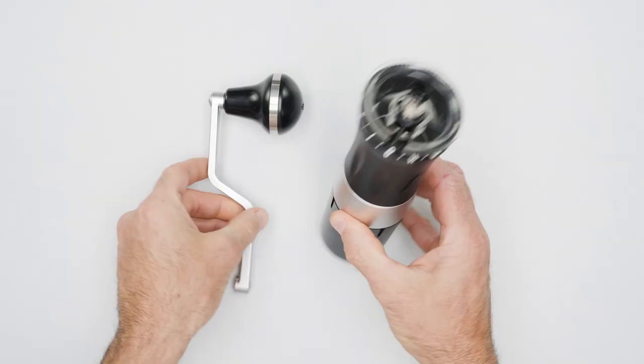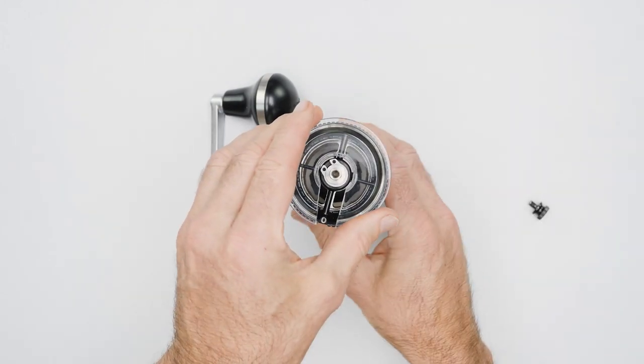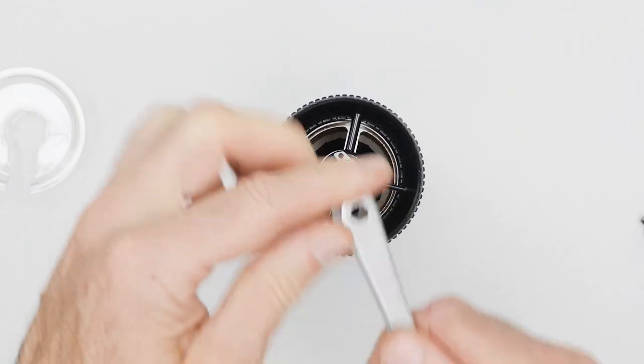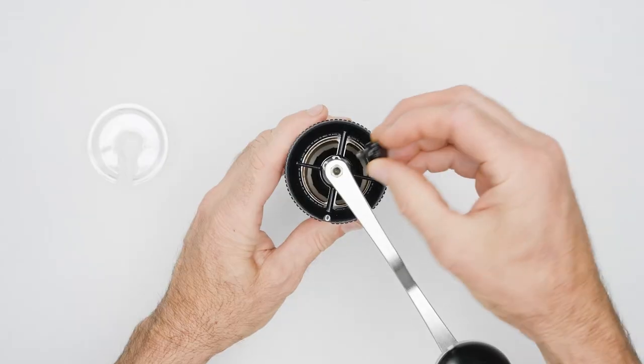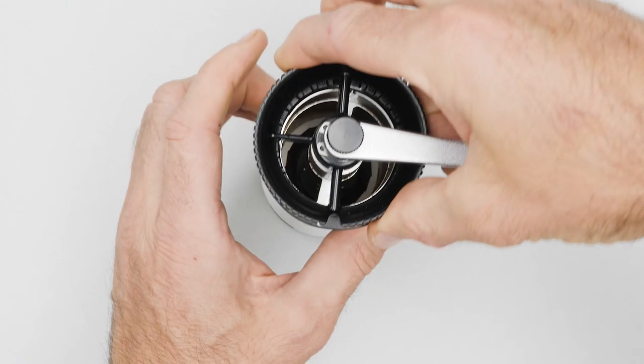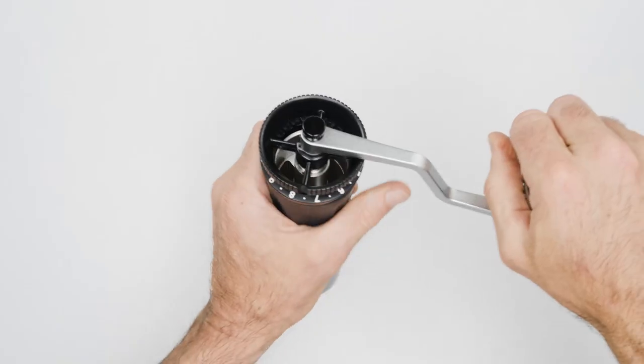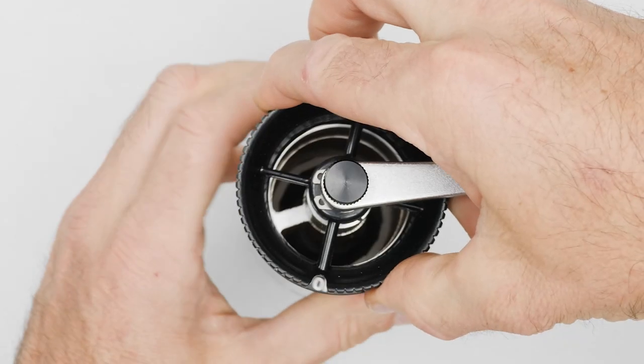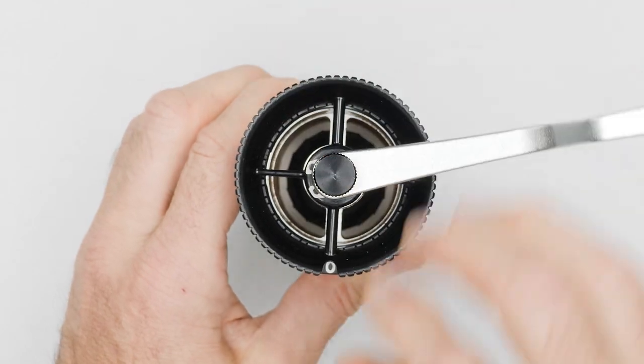To get started, remove the body cap and install the crank arm. The Royal comes set on zero. Whenever you need to find it again, rotate the crown counter-clockwise until you feel the burrs locking up, then rotate the crown clockwise until the notch of the crown lines up with the zero again.